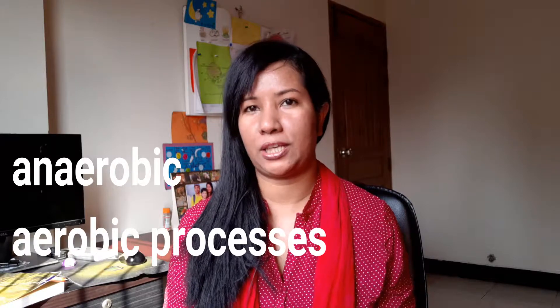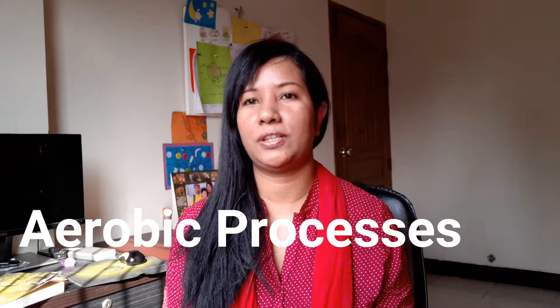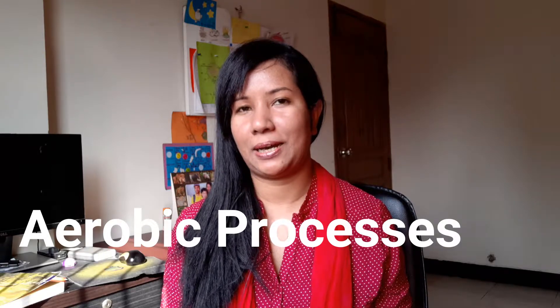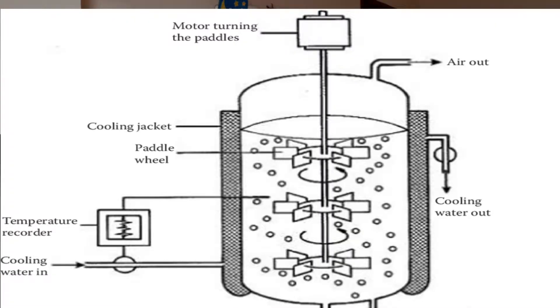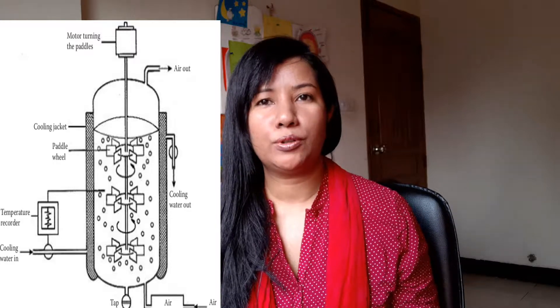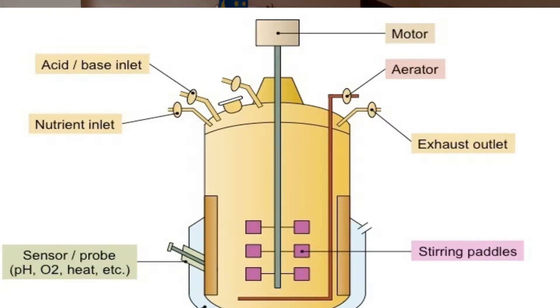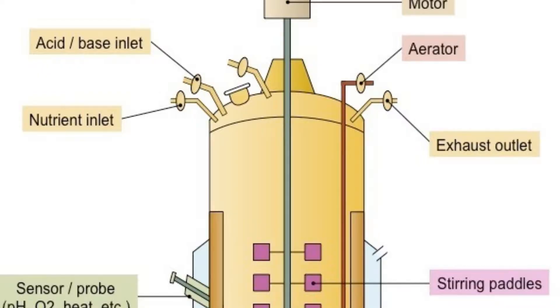Fermenters may be designed for anaerobic or aerobic processes. Since most industrial processes are aerobic, we shall outline the important features of this type of fermenter. Regarding the cooling system, removal of heat during microbial activities is vital for successful growth of the organism. Cooling water runs through a cooling jacket and removes heat from the nutrient broth. For very large fermenters, internal coils are provided through which cooling water flows, ensuring the correct temperature is maintained within the cylinder.